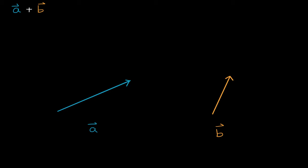One way is to say, if we want to start with vector A and then add vector B to it, what we can do is take a copy of vector B and put its tail right at the head of vector A. Notice I have not changed the magnitude or the direction of vector B. If I did, I would actually be changing the vector.